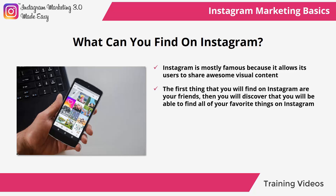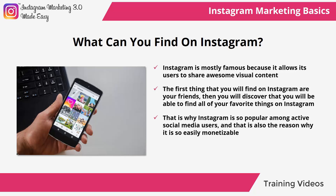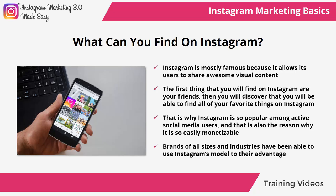The first thing you'll find on Instagram are your friends. Then you'll discover all your favorite things: your favorite brands, musicians, actors, fictional characters, even your favorite food. That is why Instagram is so popular among active social media users, and also why it is so easily monetizable — because it fosters massive engagement. Brands of all sizes and industries have used Instagram's model to their advantage, and a new breed of marketers called influencers have been able to make six-figure livings thanks to Instagram.